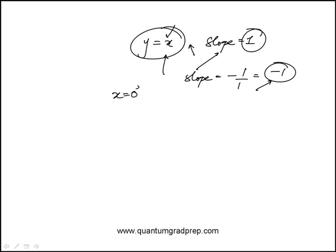So first one, x equals 0, that is actually going to look something like that. It doesn't have a slope of minus 1. It's undefined. So A is out.